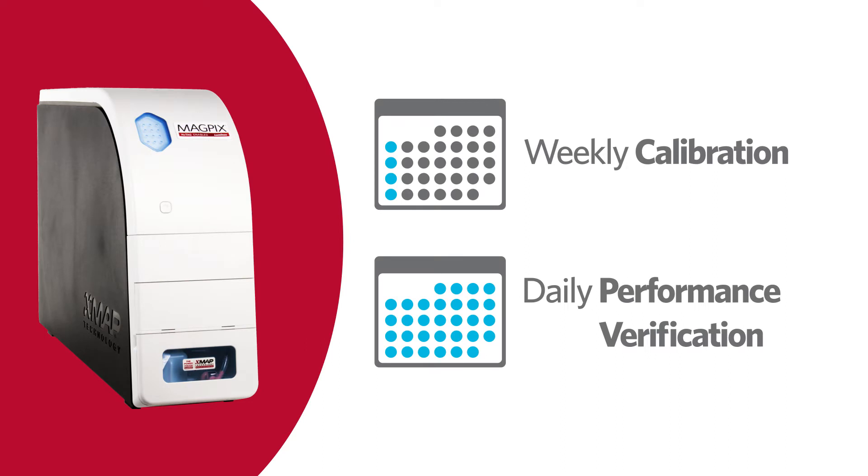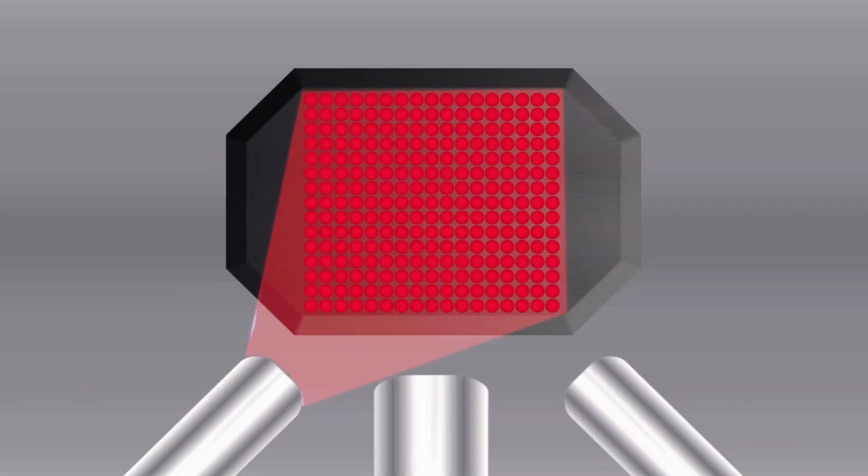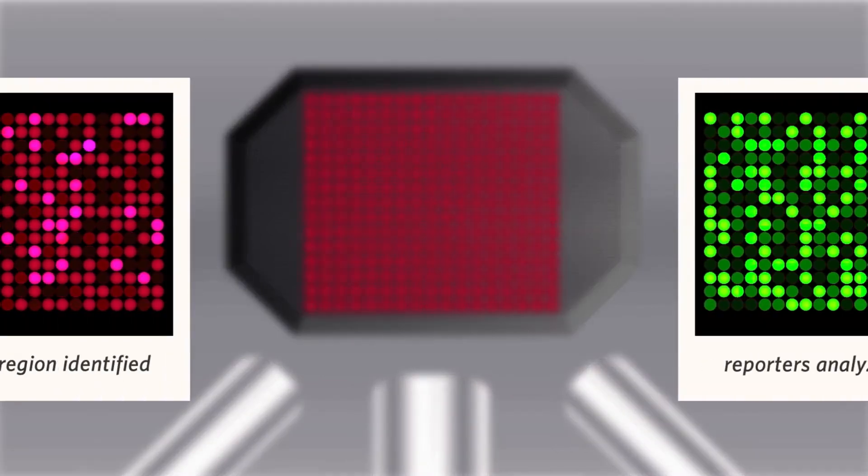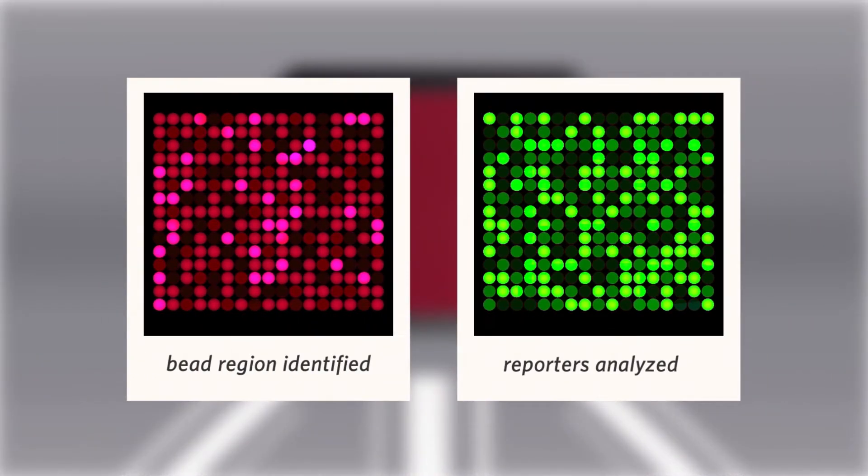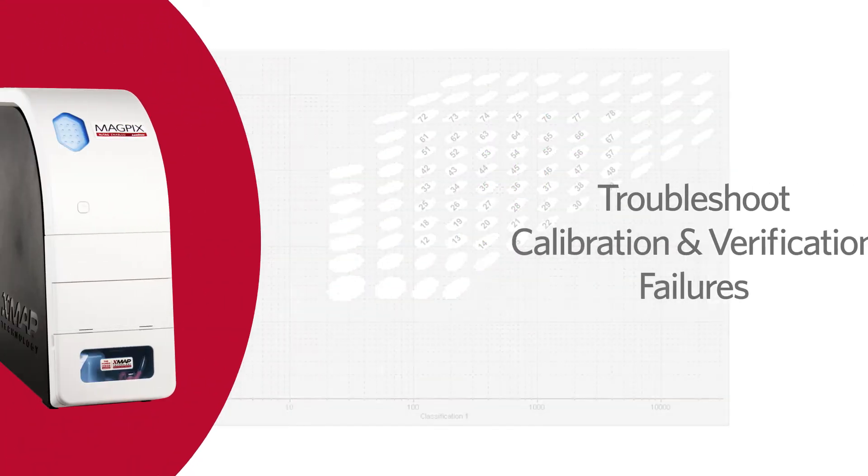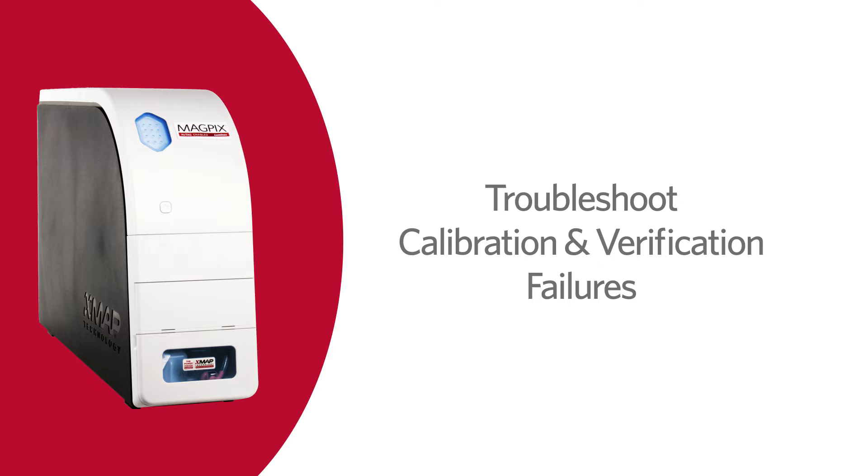Running a weekly calibration and daily performance verification on the MAGPIX instrument is essential for maintaining instrument performance. Calibration and performance verification checks the accuracy of your MAGPIX results by ensuring the MAGPIX instrument is placing beads into the correct regions on the beadmap. If the calibration and performance verification fails, it is important to troubleshoot the failure in order to get the MAGPIX instrument working correctly again.